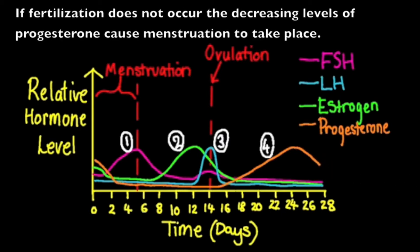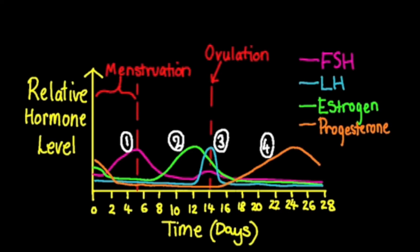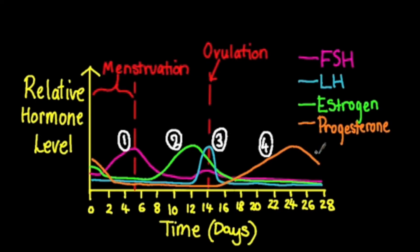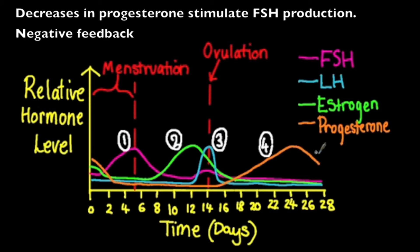If fertilization doesn't take place, the corpus luteum will disintegrate. This will result in a decrease in progesterone, and because the endometrium is no longer being maintained, menstruation will occur. Because there is a negative feedback relationship between progesterone and FSH, if progesterone levels go down, FSH increases, and this takes us right back to the beginning of the cycle.